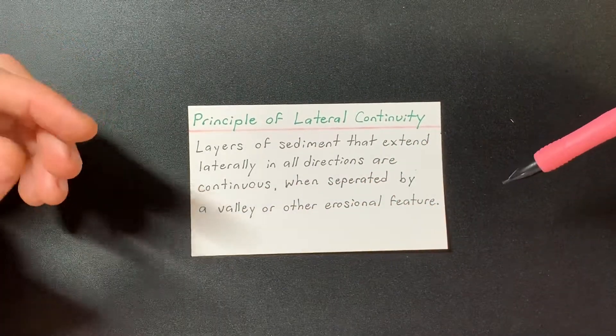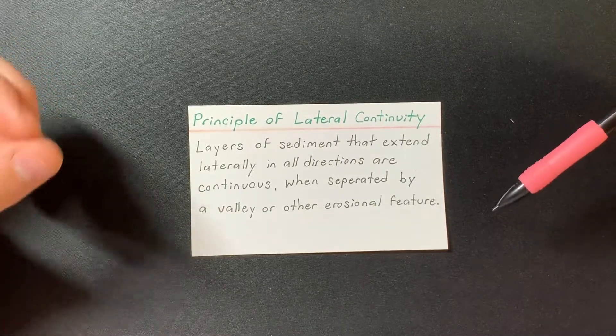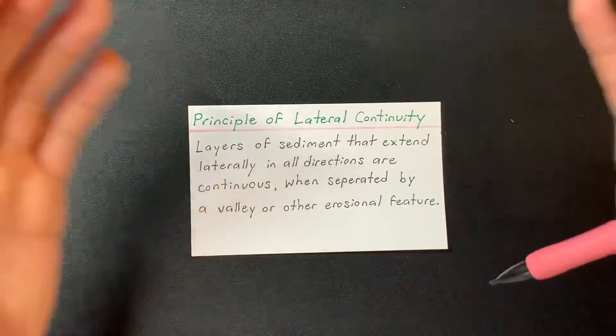So basically what that means is if you have a rock sequence or different rock layers and it's separated by a valley,